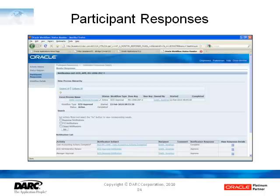The other thing to note is that in our example here I only had one person in each of the approval lists, but if there were multiple people in the approval list we'd see a record for each person. And if the notification response was no, we would know that they hadn't responded yet to the notification.